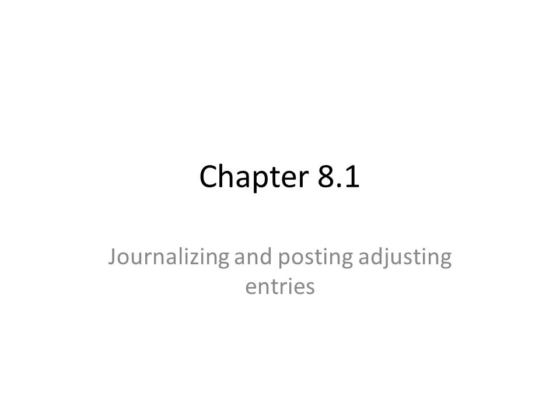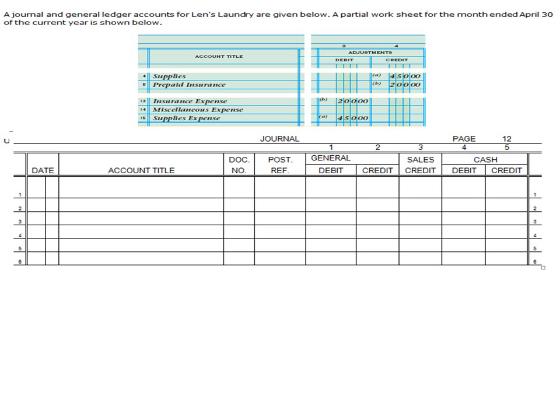Chapter 8.1: Journalizing and Posting Adjusting Entries. So we've gone through the accounting cycle — we've analyzed the transaction, we've recorded the transaction, we've posted them, we have created our worksheet, we've created our income statement and our balance sheets and our various financials, and now we're at the point where we have to journalize and post adjusting entries.